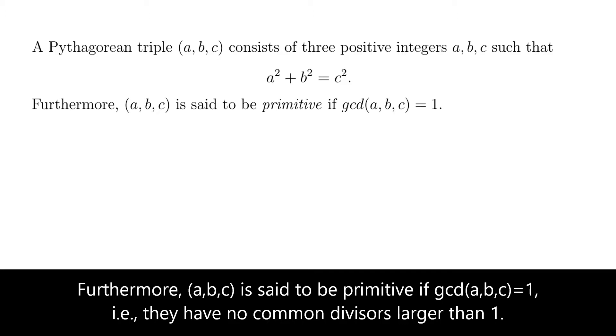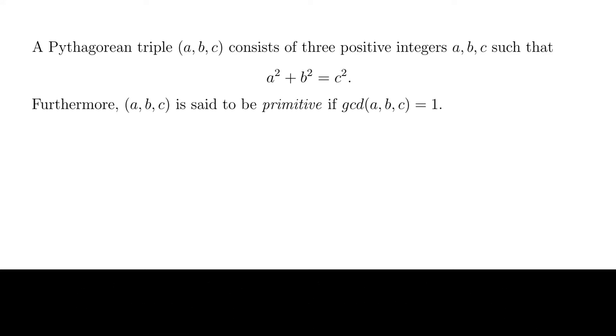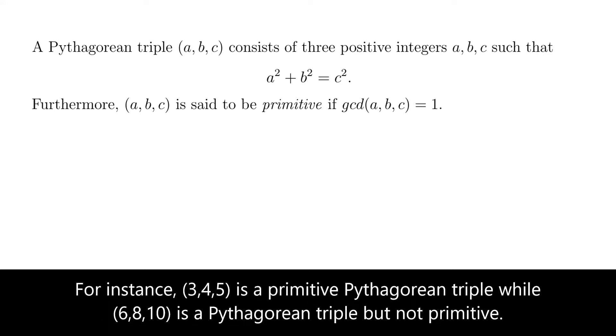That is, they have no common divisors larger than 1. For instance, 3, 4, 5 is a primitive Pythagorean triple while 6, 8, 10 is a Pythagorean triple but not primitive.